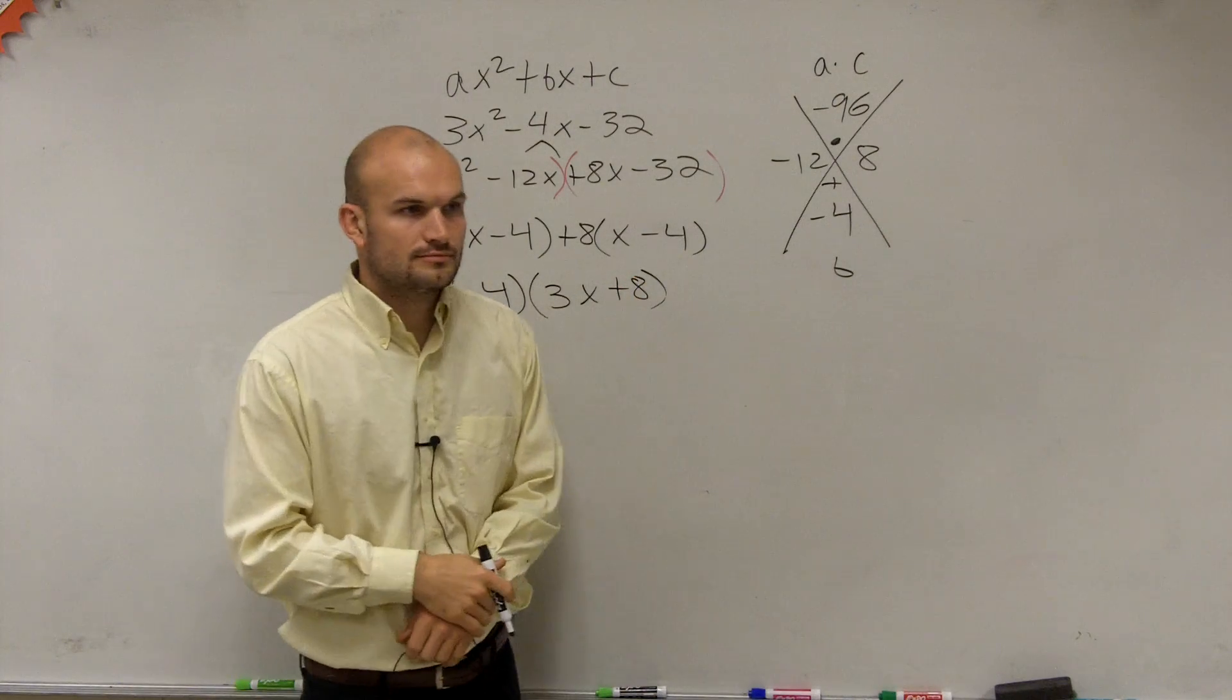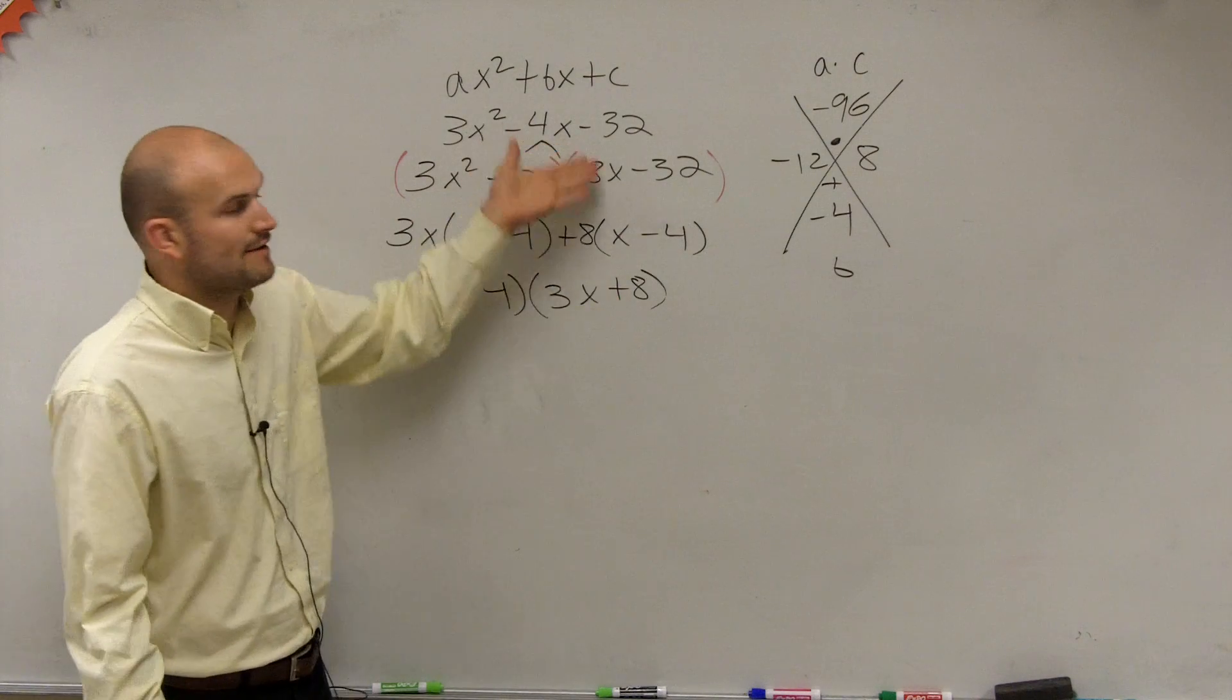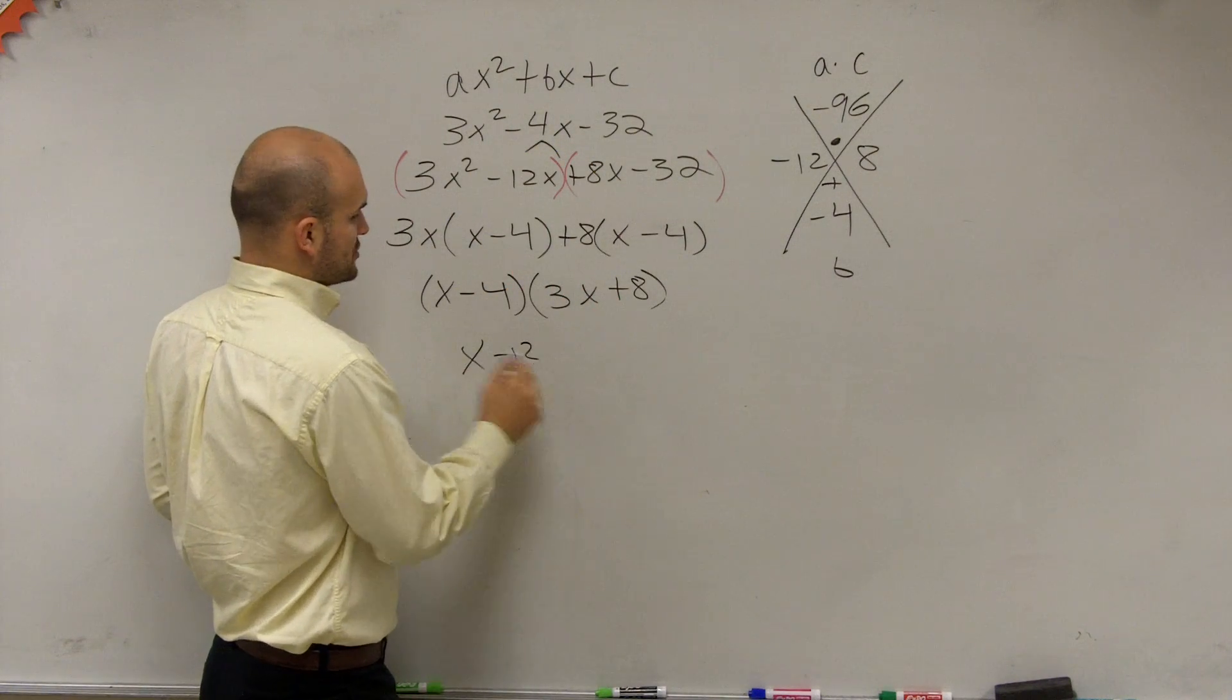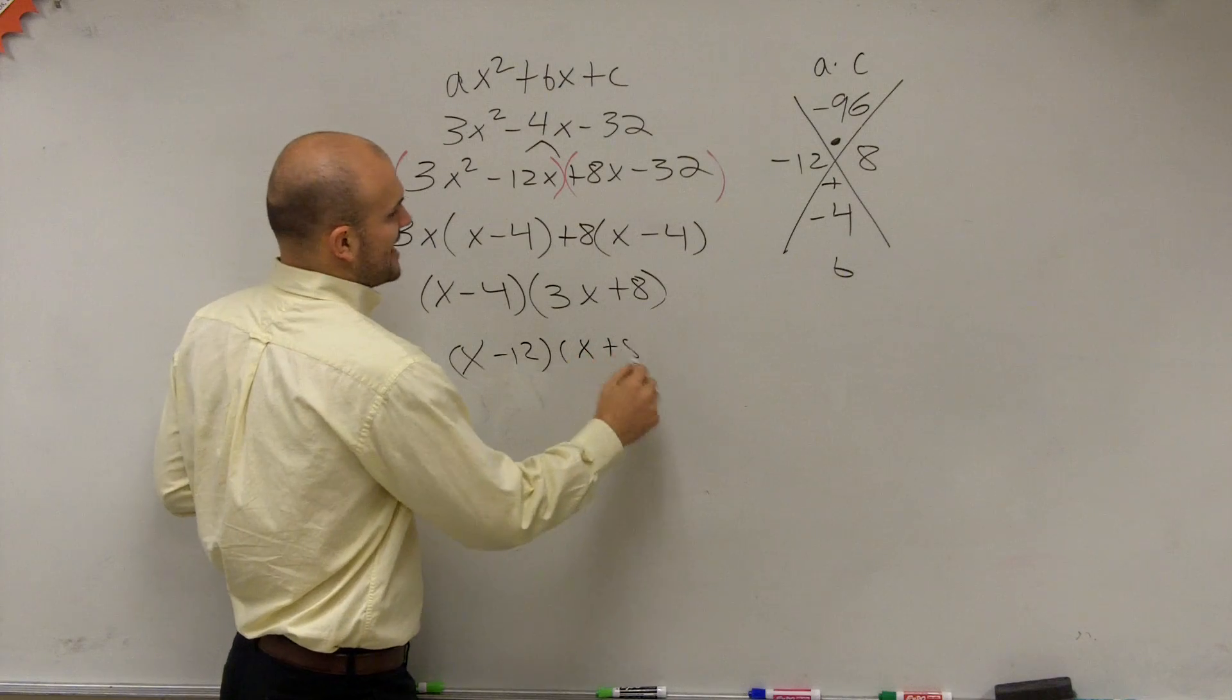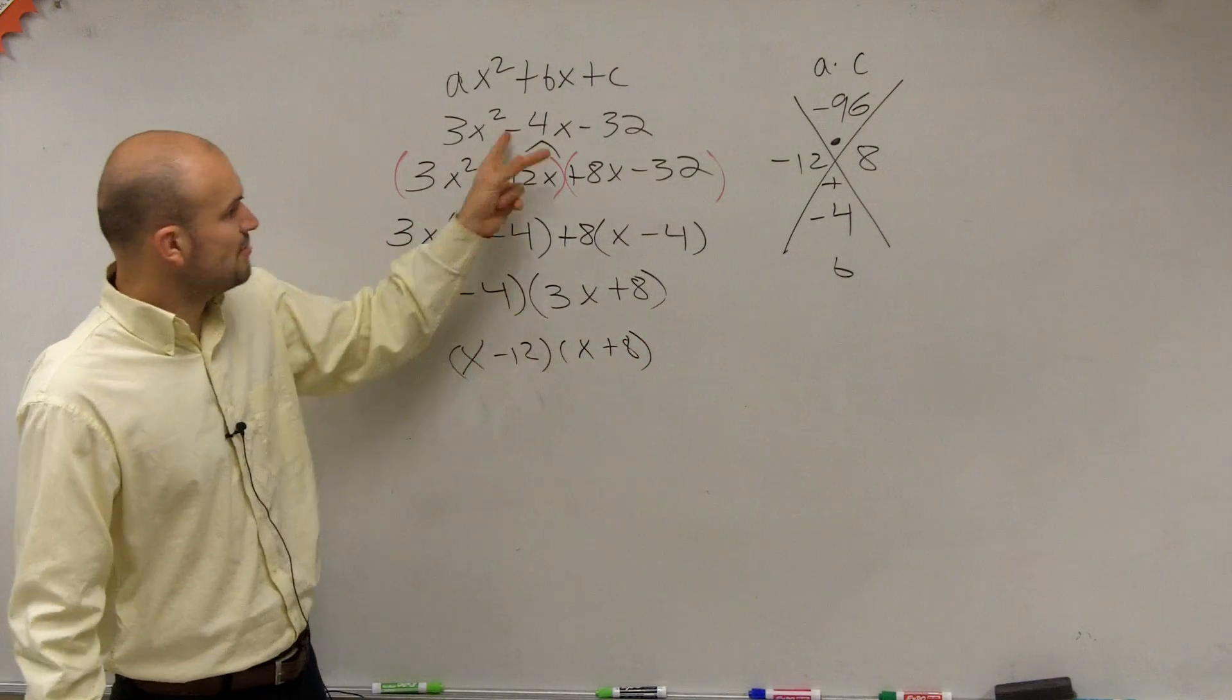Why do you have a 3x? There's a couple other different ways to do it, but the main important thing why we have to go through this second step, because if you just do x minus 12 times x plus 8, that's what we've done on easier problems. This doesn't multiply to give you that, right?